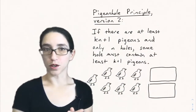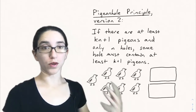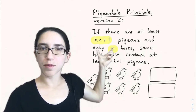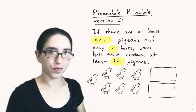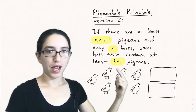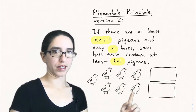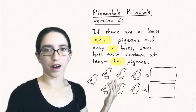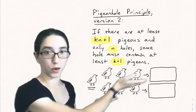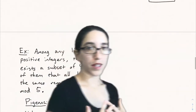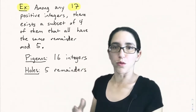Now let's look at version two of the pigeonhole principle, for when you want to show not just that some hole has two pigeons, but three or four. Version two says: if there are at least kn plus one pigeons and n holes, then some hole must contain at least k plus one pigeons. For example, with two holes and seven pigeons, we can put three in each hole, but the seventh must go somewhere, so at least one hole has four pigeons. This generalized principle can be used to prove more facts about existence.